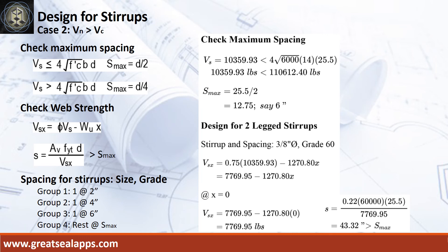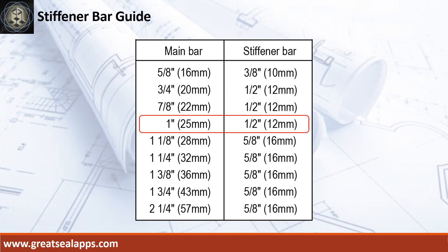The stirrup spacing is as follows: 1 at 2 inches, 1 at 4 inches, rest at 6 inches. For 1 inch diameter main bars, use 1.5 inch diameter stiffener bars.